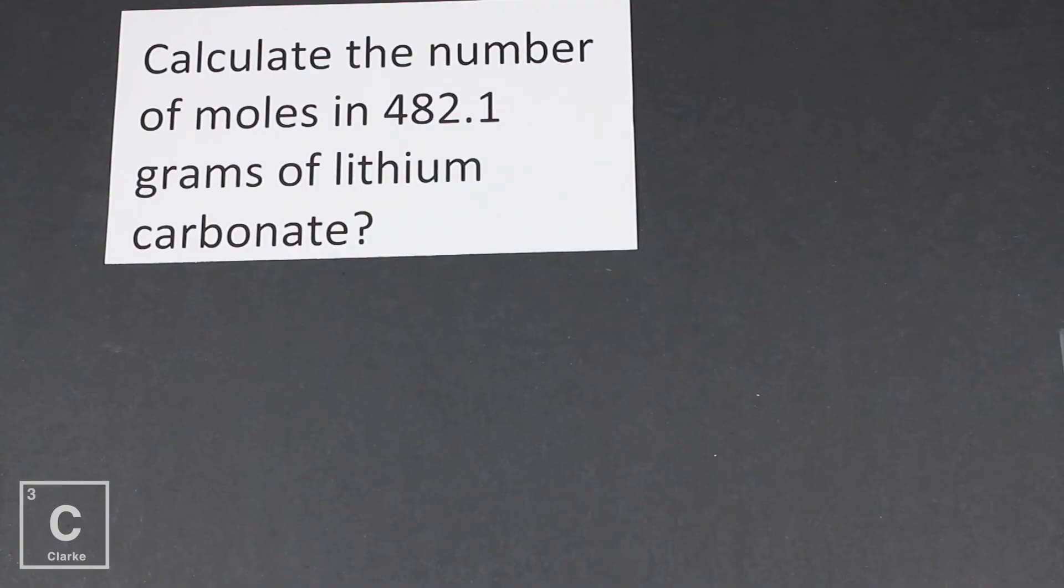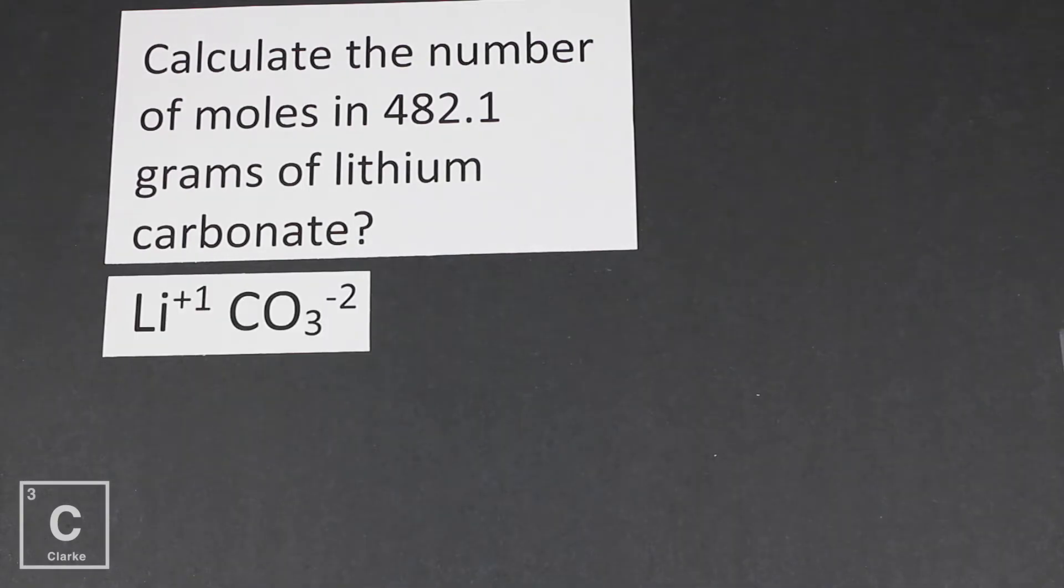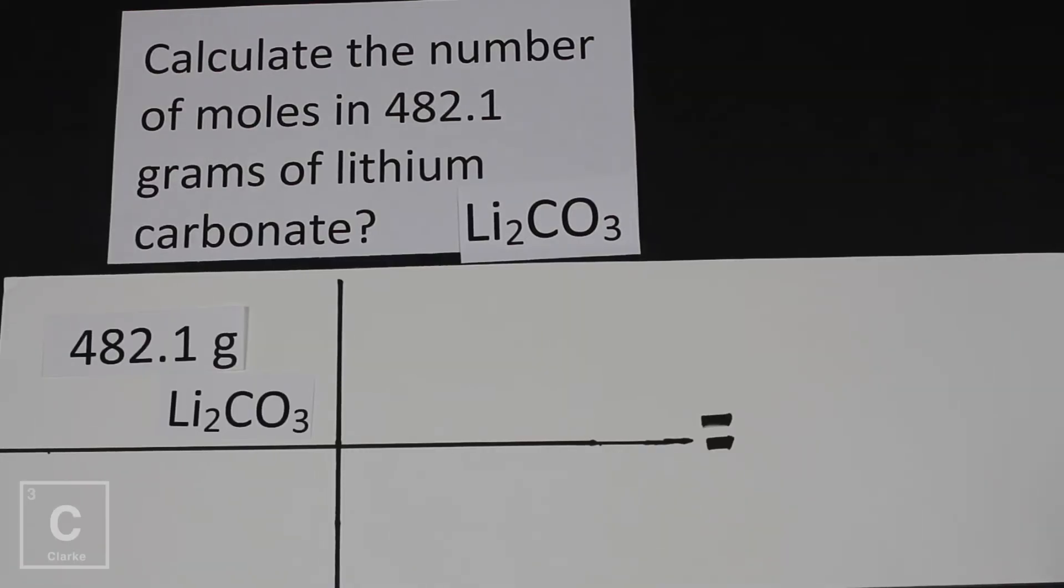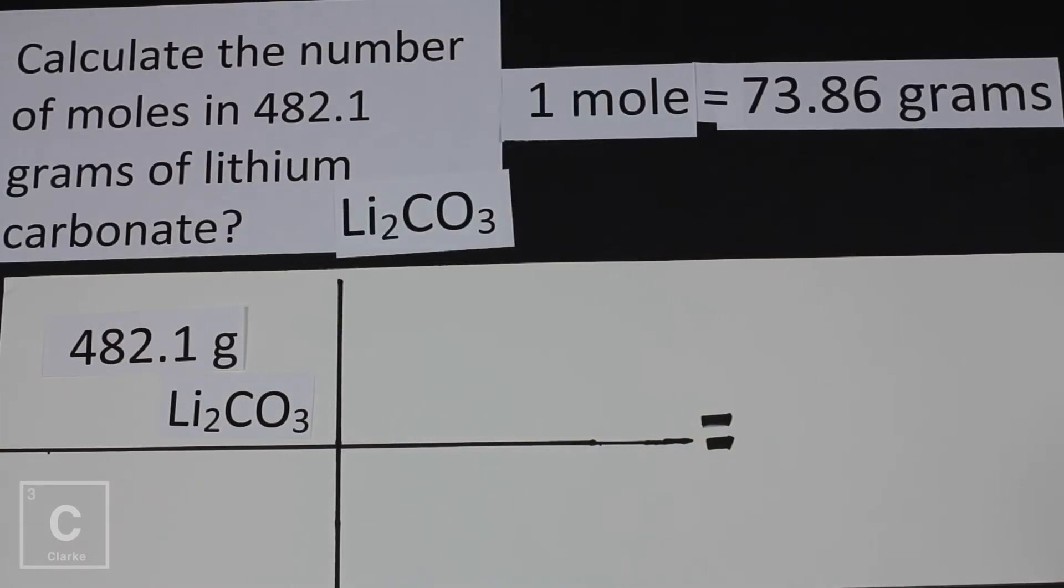This question asks us to calculate the number of moles in 482.1 grams of lithium carbonate. Since we've got grams in the problem, we're going to have to figure out that molar mass. So let's just go ahead and start there. First, we need to write that compound lithium carbonate. Lithium is a plus one. Carbonate is a minus two. We get Li2CO3. So we had two lithiums. We had one carbon, three oxygens. And when we add all of that mass up from the periodic table, we get 73.86. Now I zipped right through that molar mass. So if you're struggling with molar mass, make sure and go check out that video. Okay, so let's set this problem up. We've got 482.1 grams of lithium carbonate.